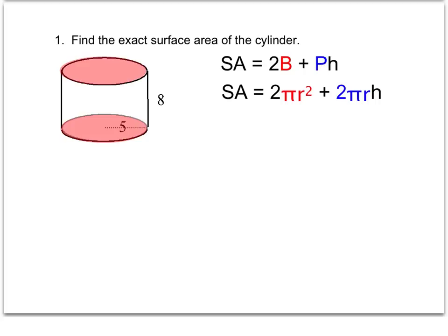p represents the perimeter of the base, and because the base is a circle, that's the circumference of the circle. The perimeter of a circle is the same as the circumference, which is 2πr.